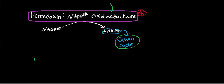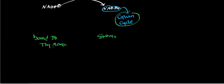When bound to the thylakoid membrane, the enzyme exists as a dimer, possibly due to stabilization needs. When free in the stroma, it exists as a monomer. There is actually some regulation on whether it's in the stroma or bound to the thylakoid membrane.